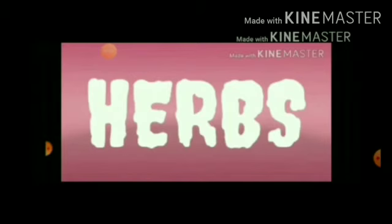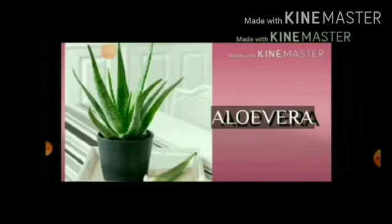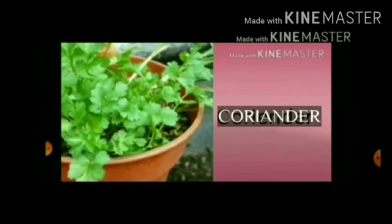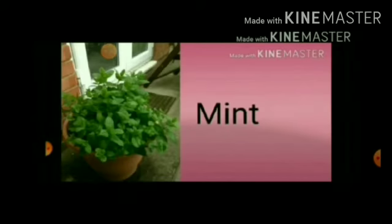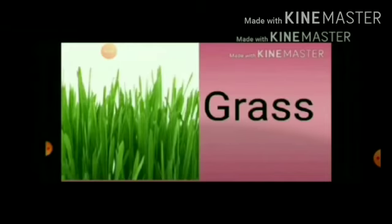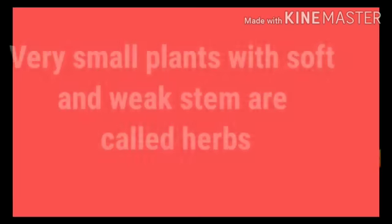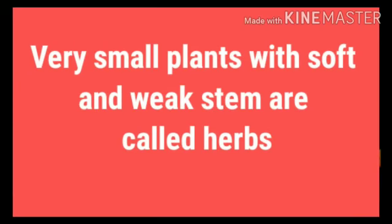Let us learn about herbs. Some herbs are aloe vera, coriander, mint, and grass. Small and soft stemmed plants are called herbs. Children, herbs have very small and soft stems.